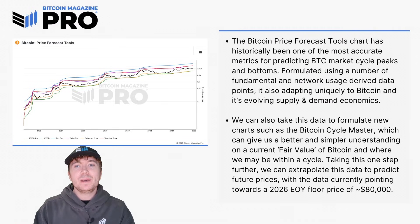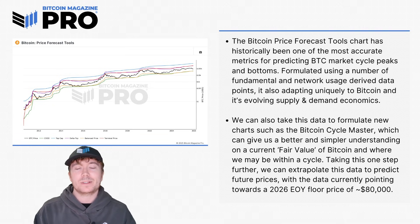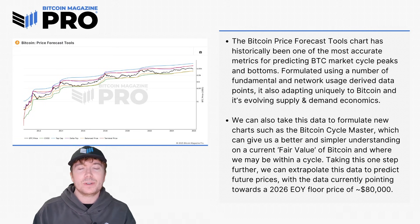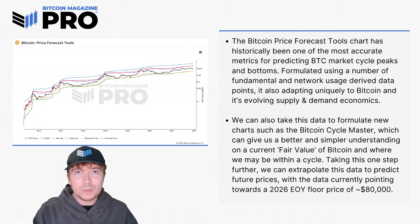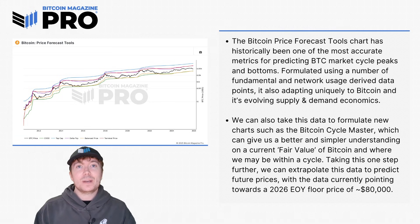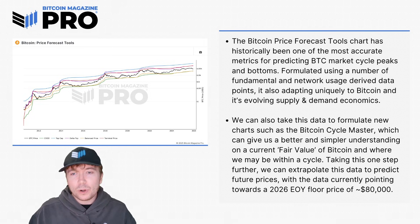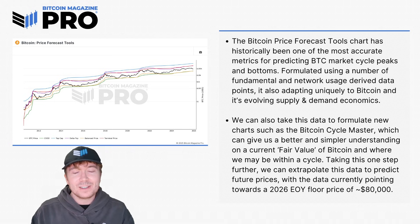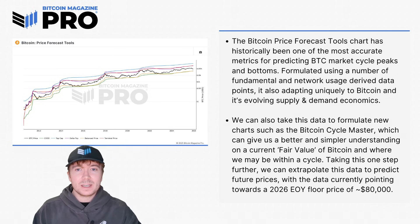To summarize: the Bitcoin price forecast tools chart has historically been one of the most accurate metrics for predicting Bitcoin market cycle peaks and bottoms, especially considering it's formulated using fundamental and network-usage derived data points rather than just psychological levels, traditional TA points, or methods more applicable to traditional markets like equities and commodities. Bitcoin is unique in that we can see all of this data on-chain — we can see the real-time supply and demand economics dynamically evolving. Bitcoin Magazine Pro will continue to evolve and adapt these levels to ensure they remain accurate and reliable going forward.